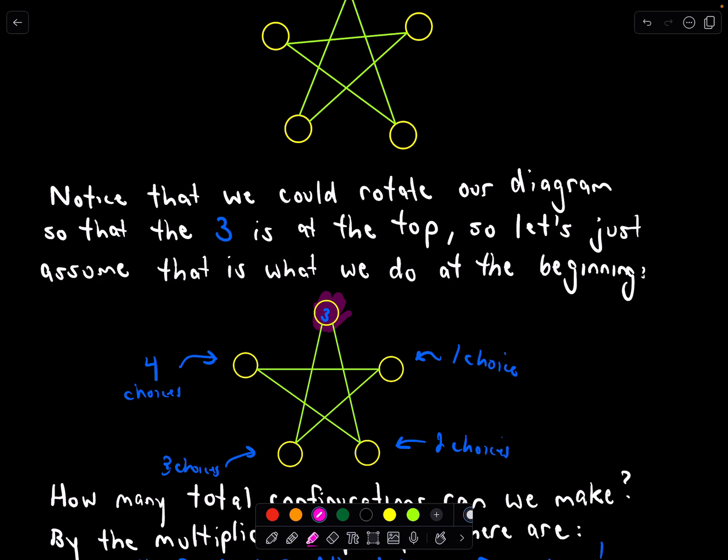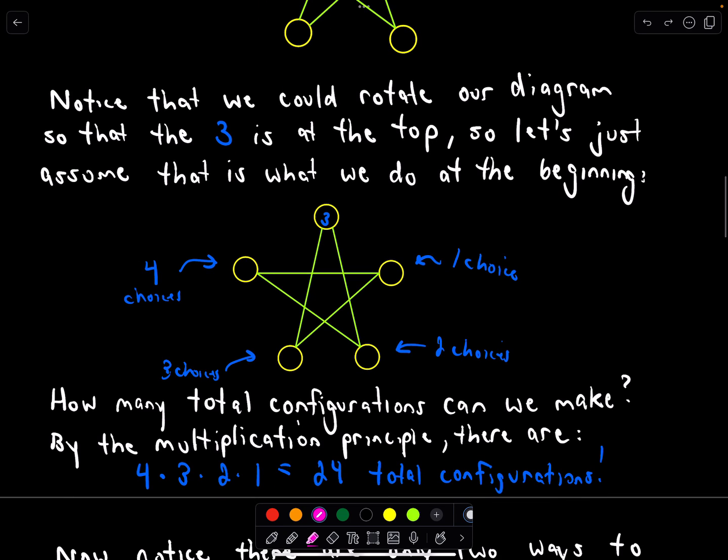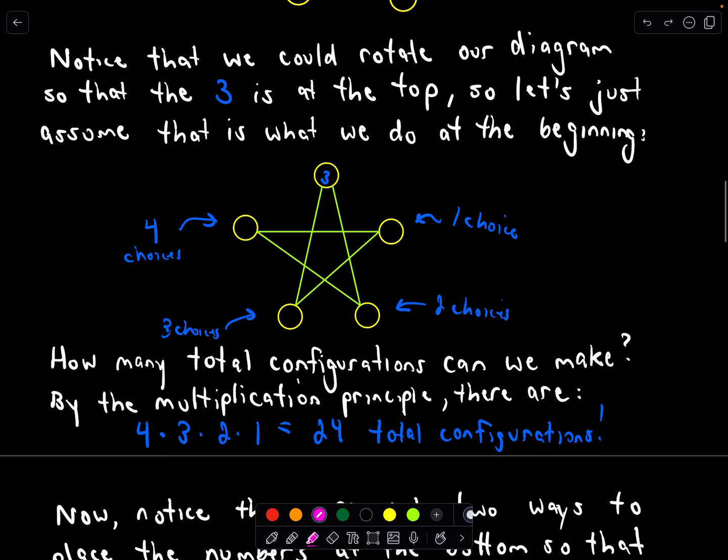So we want to know how many total diagrams could we form. Well, we could use the multiplication principle. If I look at this circle on the left, I would have 4 numbers remaining for that circle, and then if I go to the next circle, I would have 3 choices for that one, and then 2 choices for this one, and then 1 choice remaining for this one. So if my 3 is at the top, I can use the multiplication principle to say 4 times 3 times 2 times 1. I'm going to get 24 total configurations.